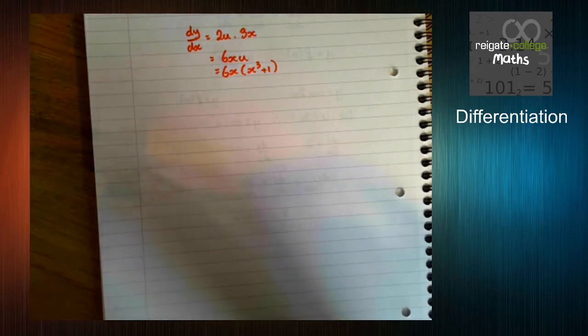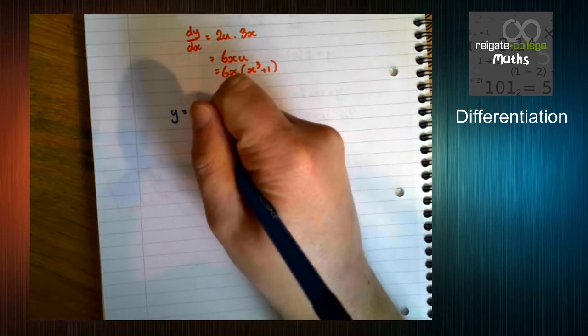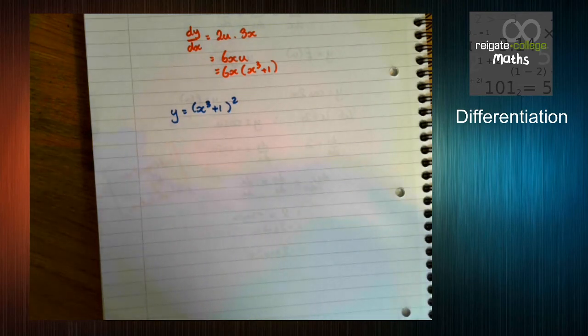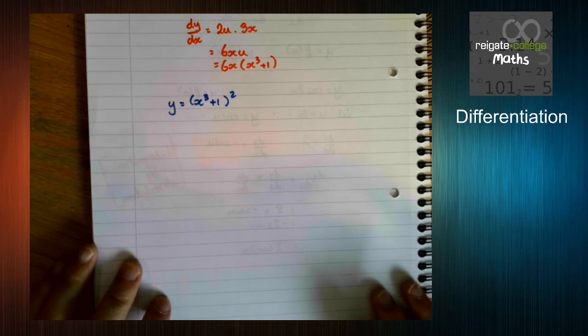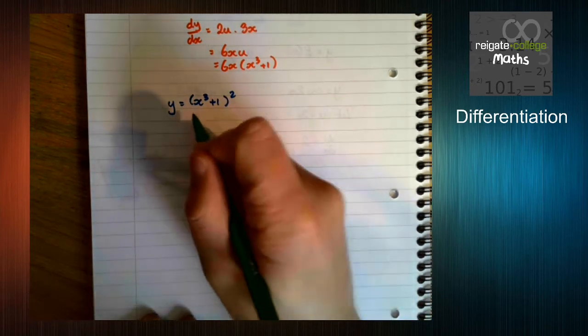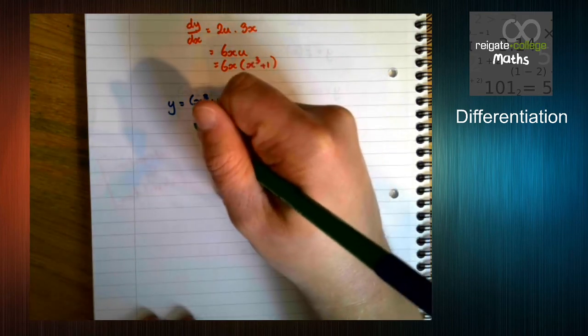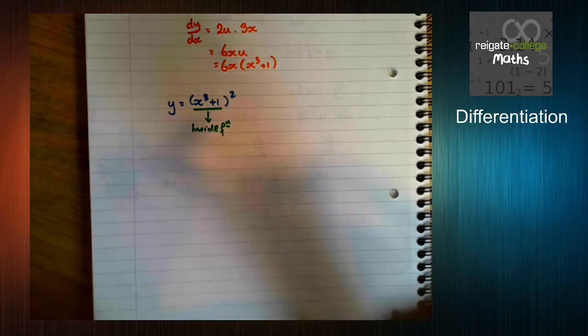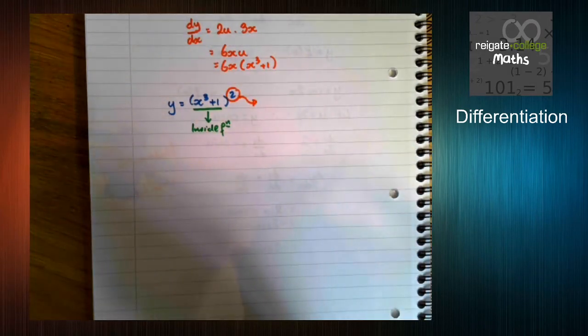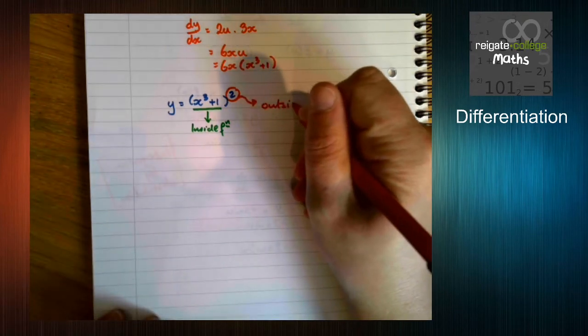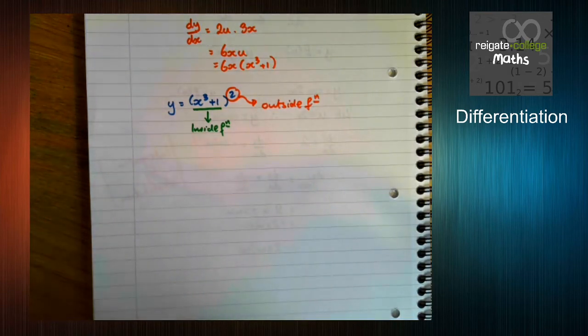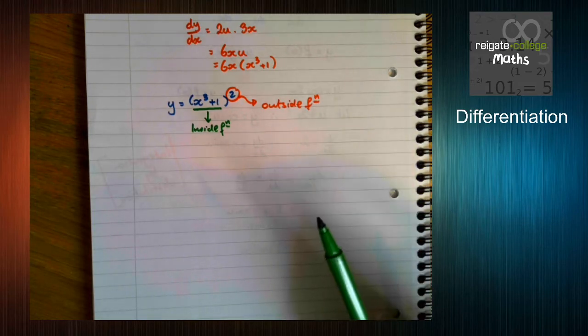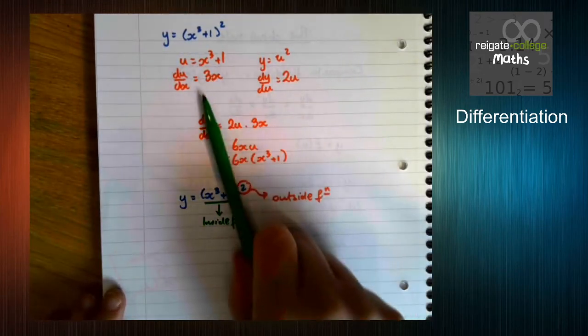However, with all chain rule type questions, you can try and spot a trick. Now this is a little more abstract, but it can help speed these questions up. The first thing you need to do is identify what is the inside function and what is the outside function. So the inside function is what we would call the u-bit. The outside function is the y-bit. So we're going to think, how do I do all of these steps but in my head?